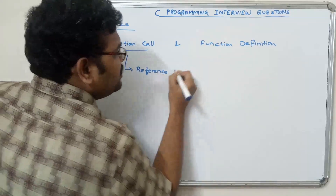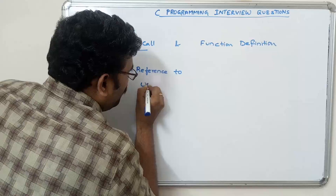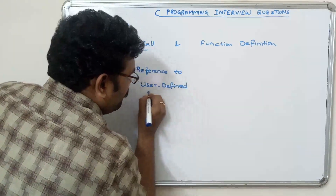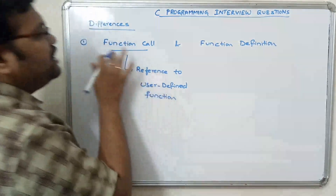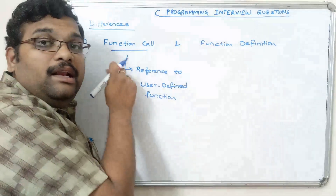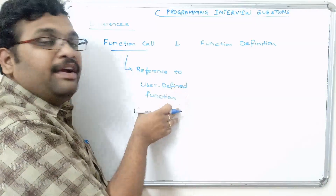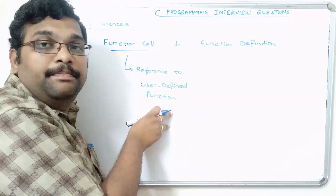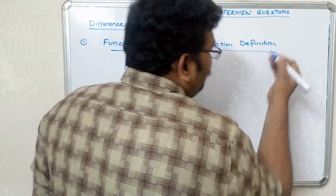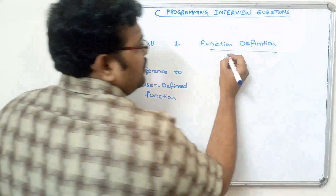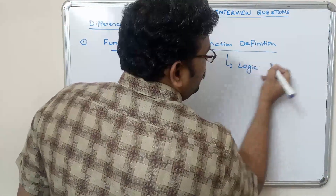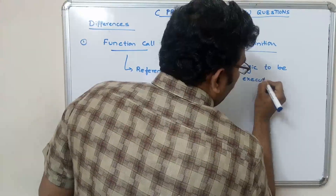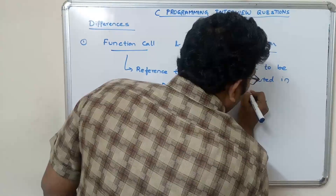This reference is the function call. Whenever the control executes this function call, automatically the control will move to the user-defined function. The actual logic we are writing to implement is the function definition — it is the actual logic to be executed in the user-defined function.